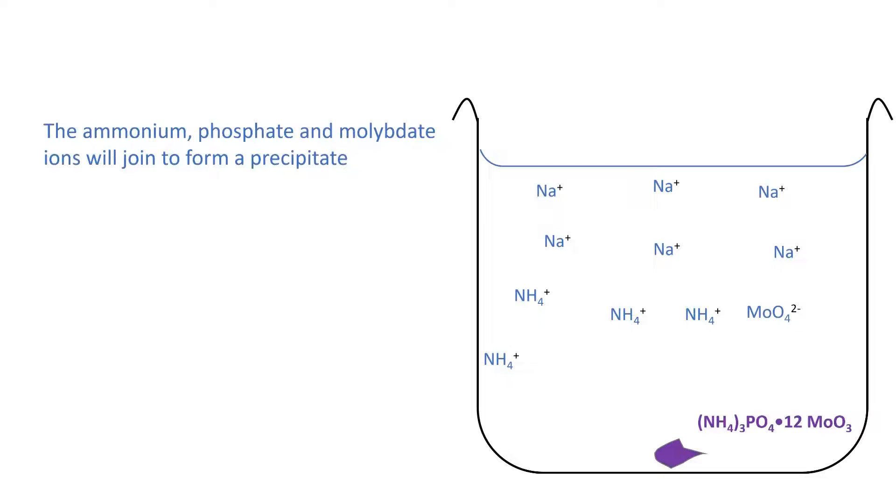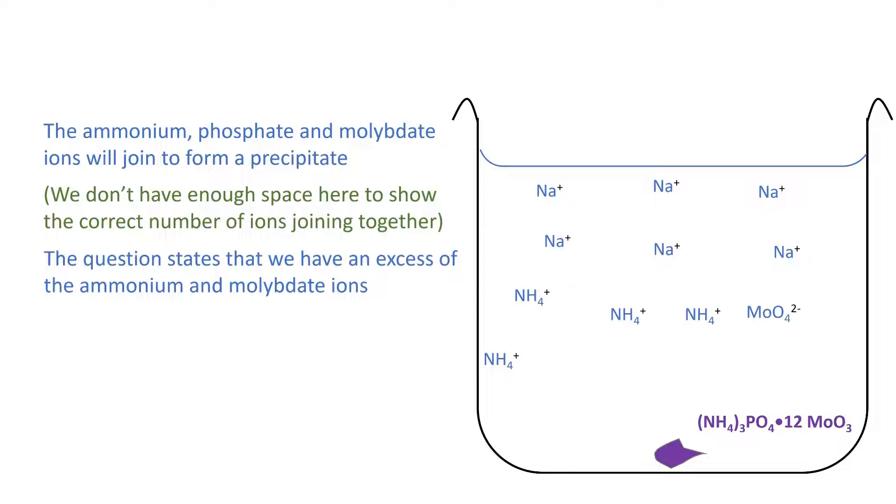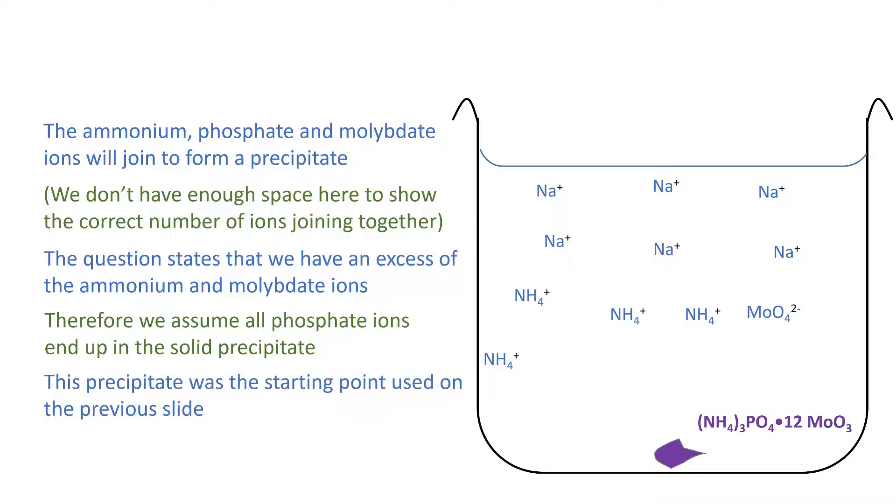We don't have enough space to show the correct number of ions joining together here, but we can have the actual chemical formula on the side. The question states that we have an excess of the ammonium and molybdate ions. Therefore, we assume all the phosphate ions from our solution end up in the solid precipitate. This is the precipitate that was the starting point for our calculation on the previous slide.